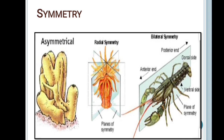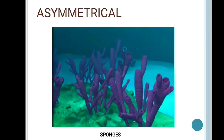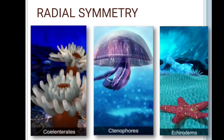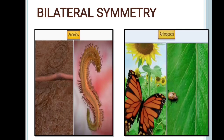Symmetry is another feature by which animals are classified. They can be asymmetrical like sponges, or exhibit radial symmetry like cnidarians, ctenophores, and echinoderms. However, most animals like annelids and arthropods exhibit bilateral symmetry.